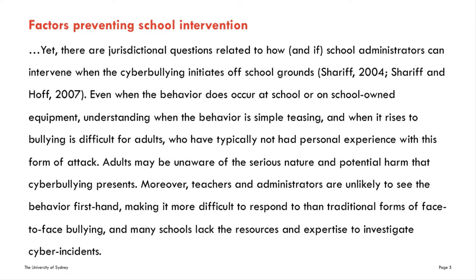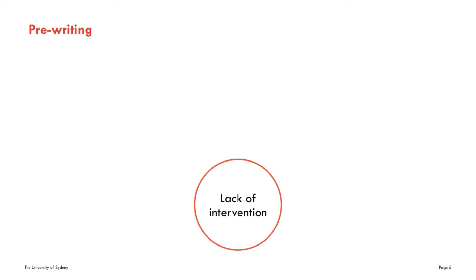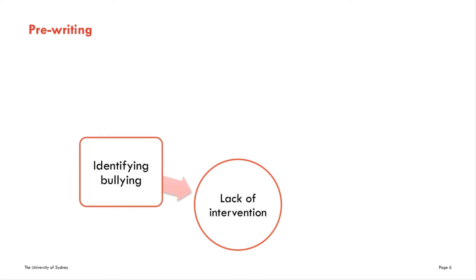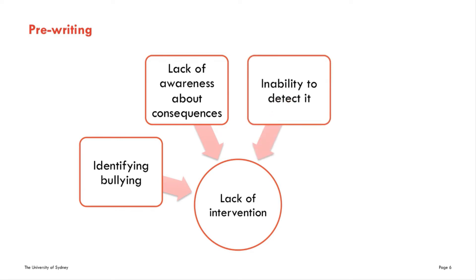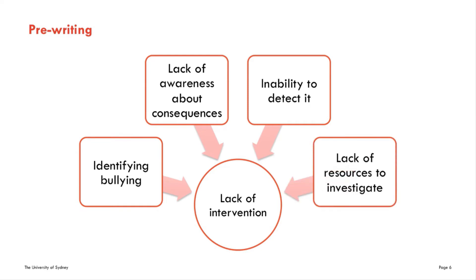I will present now a possible pre-writing diagram for this section. As I explain the diagram, notice the difference between my spoken words and those on the screen. Putting your ideas in plain English and then translating them into concise academic form may be a useful technique for paraphrasing. So, back to cyberbullying: teachers don't intervene in cyberbullying incidents because it's hard for them to tell bullying from regular teasing, also because they don't know how serious it is, or maybe simply because they don't see it as teachers rarely befriend students on Facebook, and finally, even if detected, they don't have the resources to investigate the matter.